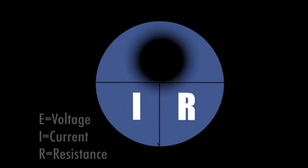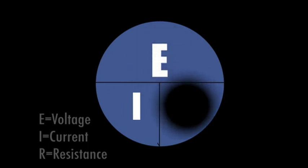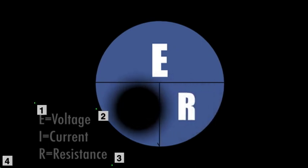Likewise, if I were solving for resistance, I would cover the R, leaving E divided by I as my equation. And again, if I were solving for current, I would cover the I, leaving E divided by R as my equation.